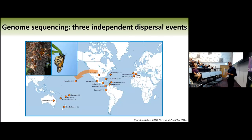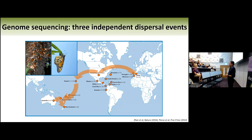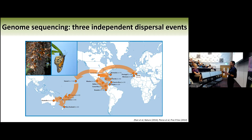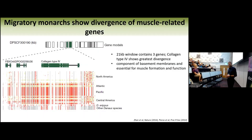This genetic distance map shows the North American population as the ancestral population, from which there were three independent dispersal events around the world where monarchs lost their migration. Monarchs from North America dispersed into Hawaii, then further west across the Pacific Ocean. Monarch butterflies also dispersed east all the way to Portugal, Morocco, and Spain, and from there to some Atlantic islands. Then monarchs dispersed through the Caribbean and down south to the northern parts of South America. This is really a natural experiment where monarchs have lost their migration three independent times.